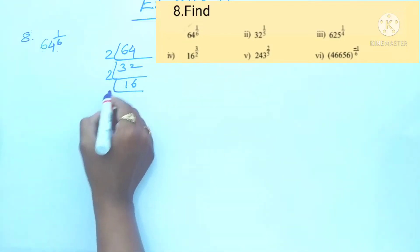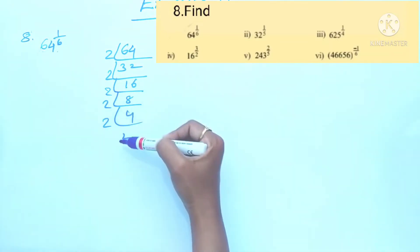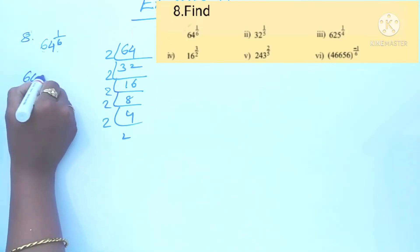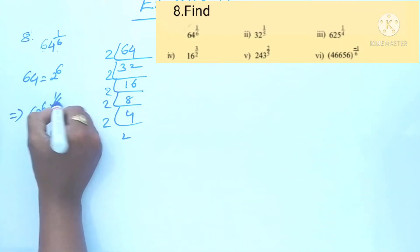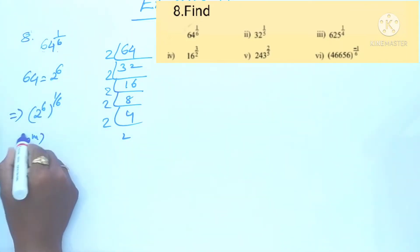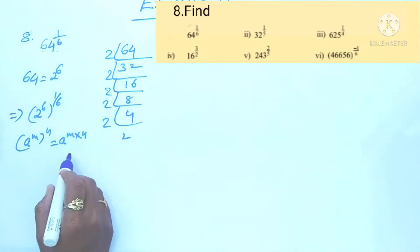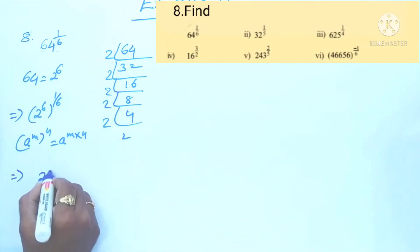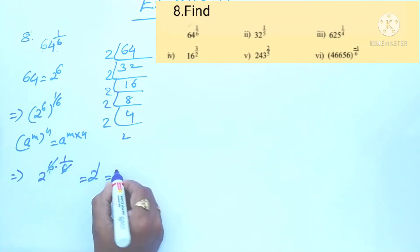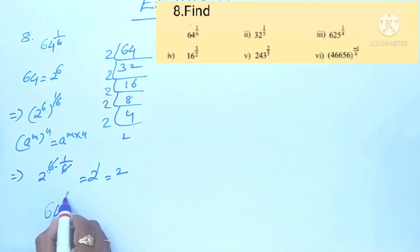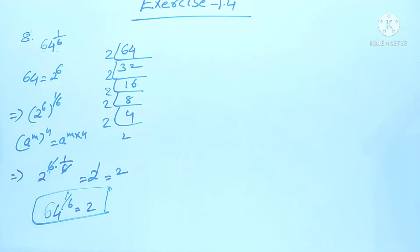Counting the factors: 1, 2, 3, 4, 5, 6 — so 64 equals 2 to the power 6. That implies 2 power 6, whole power 1 by 6. Using the law of exponents: a power m, whole power n equals a power m into n. So 2 power 6 into 1 by 6 gives 2 power 1, which is 2. So 64 to the power 1 by 6 equals 2. Next, our second problem: 32 power 1 by 5.